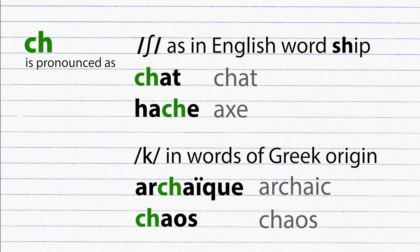So when a word contains CH and is pronounced as K, you know that this word has a Greek origin.